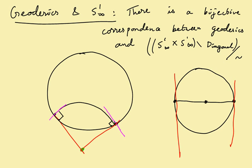Now, no other chord works because no other chord is actually perpendicular to both endpoints. So in either case, given a geodesic, you get a pair of points which it ends. But given a pair of points, you can canonically associate to it the only geodesic that passes through them.